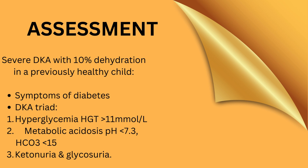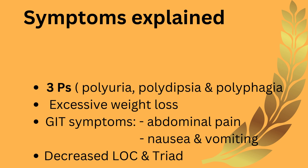Why does this patient present with the above symptoms and signs? DKA is one of the most common hyperosmolar states in pediatrics following hypernatremia. In this case, it is the glucose that is high extracellularly instead of sodium. The high glucose causes osmotic diuresis, leading to polyuria. Because of this excessive polyuria, patients become dehydrated. There are three P's associated with diabetes: polyuria, polydipsia, and polyphagia.